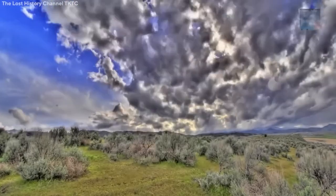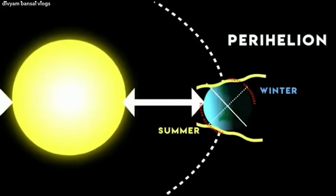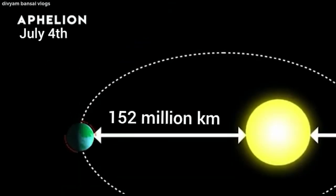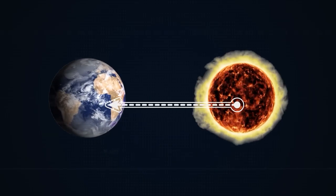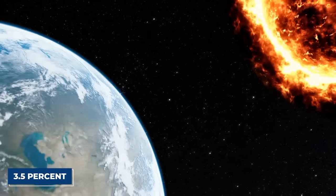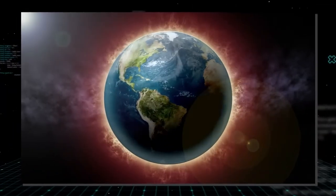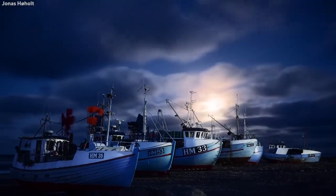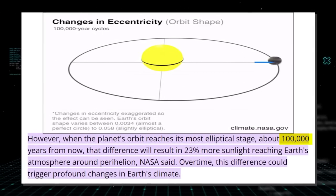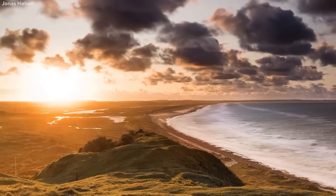The eccentricity cycle has a very small effect on global annual insolation — Earth's exposure to the sun's rays — and is a minor contributor to annual seasonal climate variations. Earth currently reaches its closest point to the sun, perihelion, in early January, and its farthest point, aphelion, in early July. The difference in distance is about 3.2 million miles, or 5.1 million kilometers — only about 3.5 percent of the average Earth-sun distance. As a result, 6.8 percent more sunlight enters the atmosphere in January than in July. However, when the orbit reaches its most elliptical stage in about 100,000 years, the difference will result in 23 percent more sunlight reaching Earth's atmosphere around perihelion, potentially causing significant climate changes.